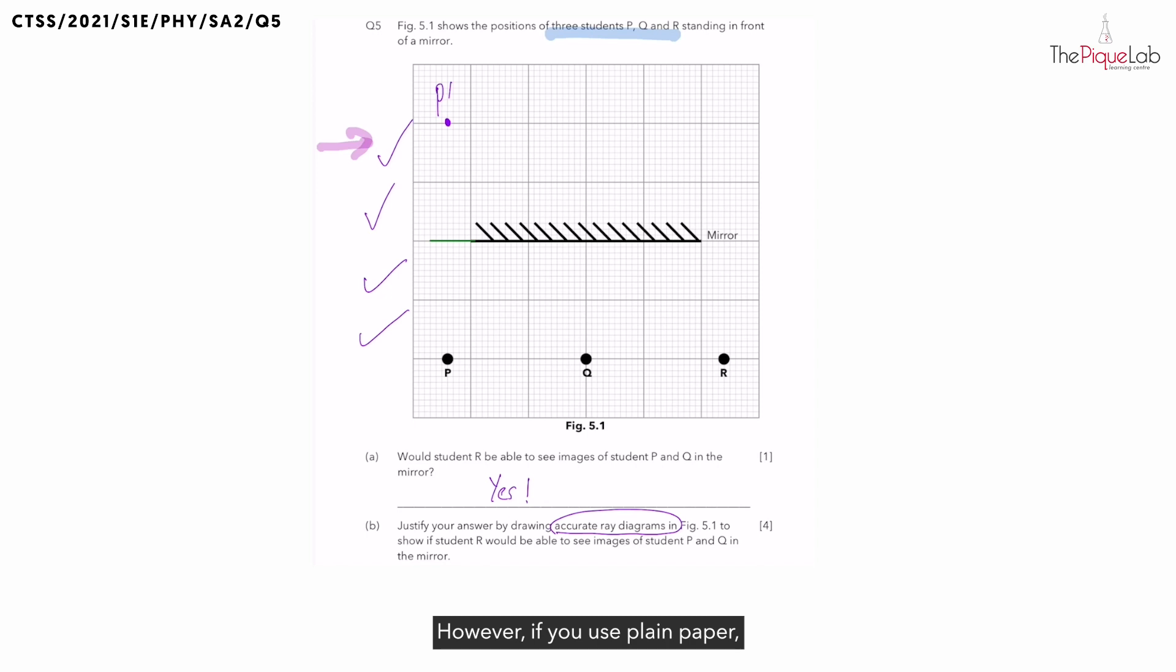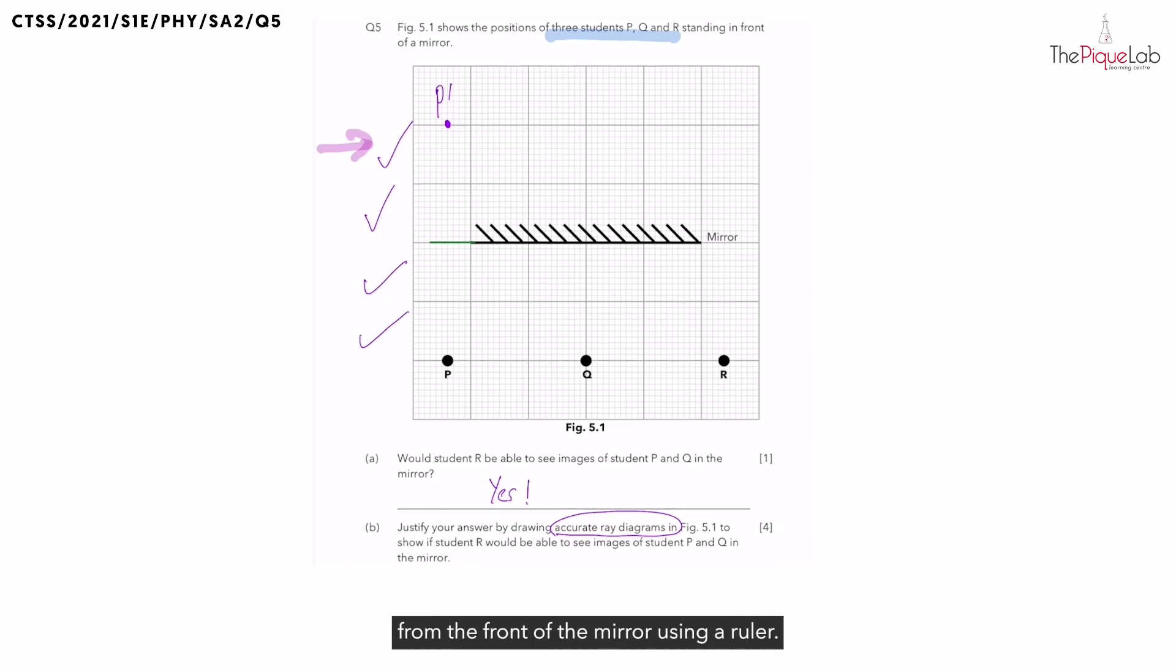However, if you use plain paper, then we need to measure the distance of the object from the front of the mirror using a ruler and make sure that the image is the same distance behind the mirror. I will also add these lines to indicate that these two are equal distances. Now that's step one. If you want to pause the video and do the same for Q, you can do that now.